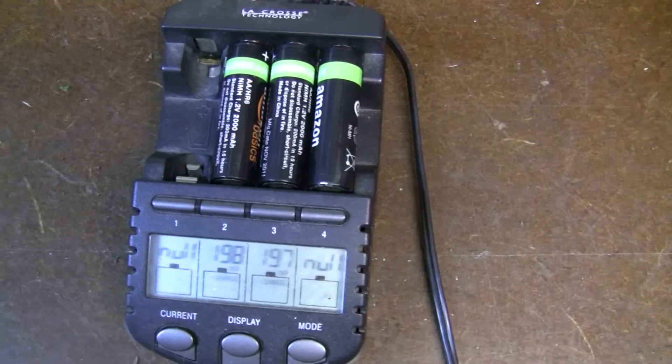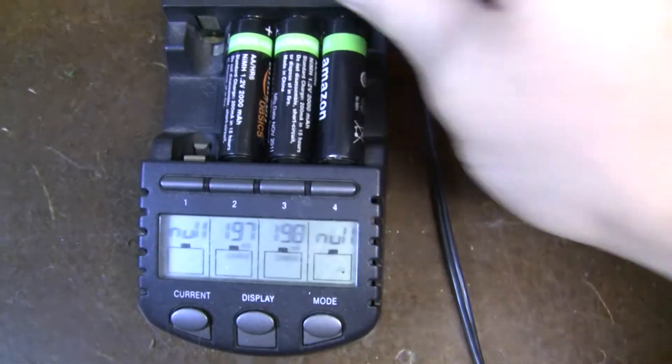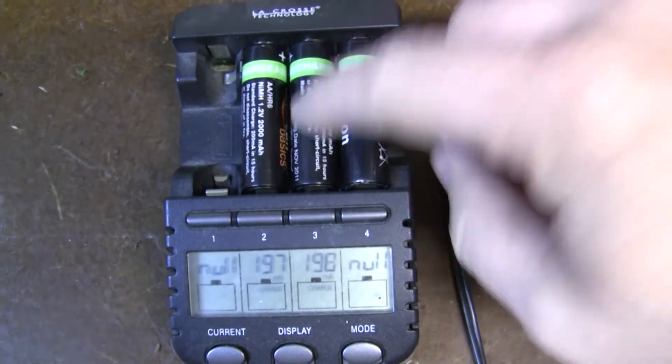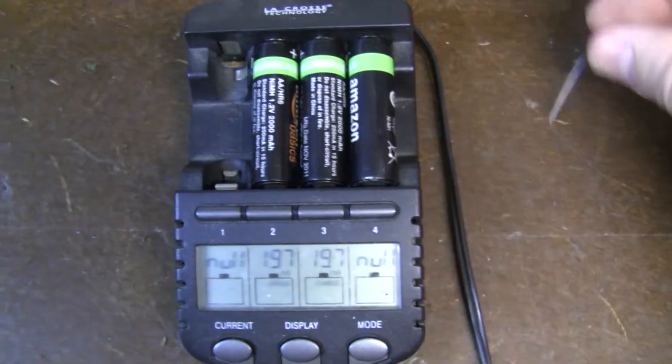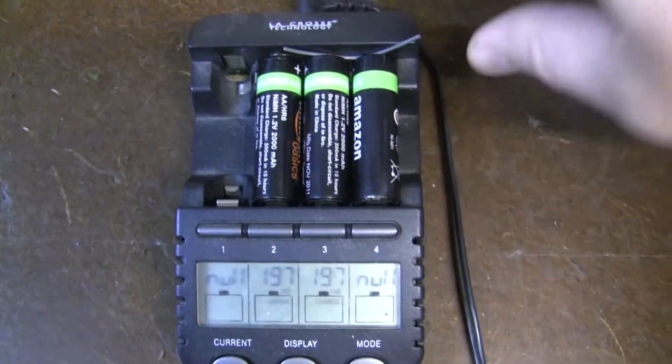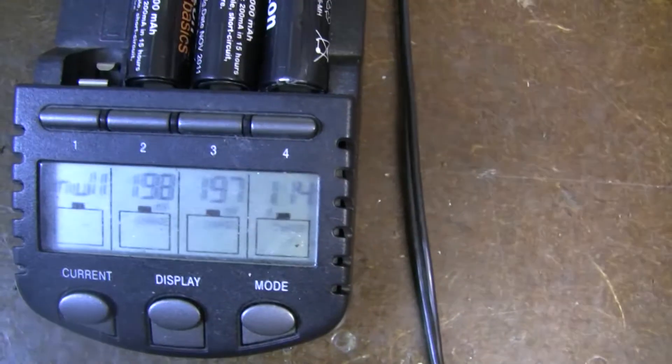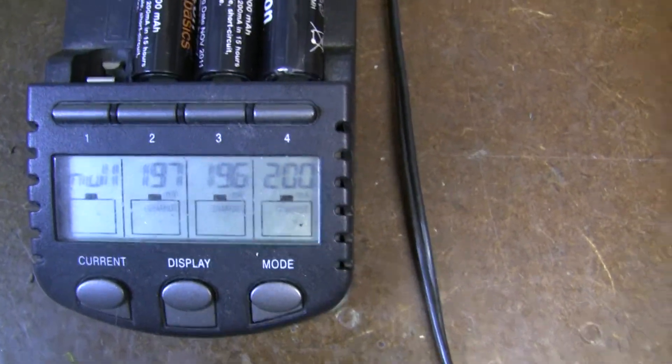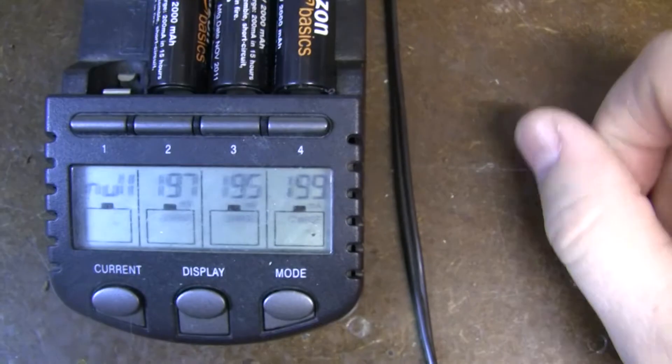So a common easy fix for this is to get a paper clip or a small piece of wire, put it next to a battery that's charging, and all you have to do is short it out until it comes back. And that's really all you have to do, it'll jump start that other battery, and you'll be good to go.